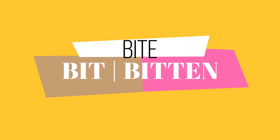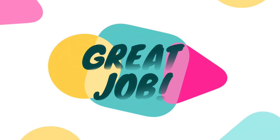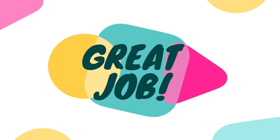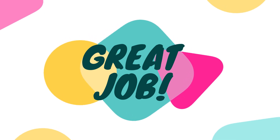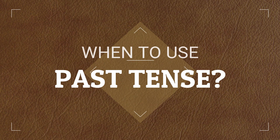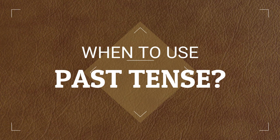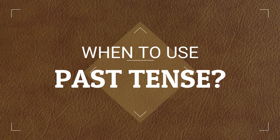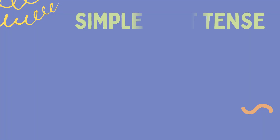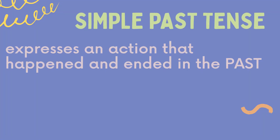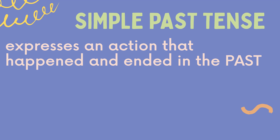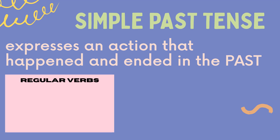It is important that we know the Past Tense and Past Participle of the verb before we discuss the Past Tense and Past Perfect Tense. But when do we use Past Tense? We have to know that Past Tense, or Simple Past Tense, expresses an action that happened and ended in the past. First, we have two types of verbs: regular verbs and irregular verbs.